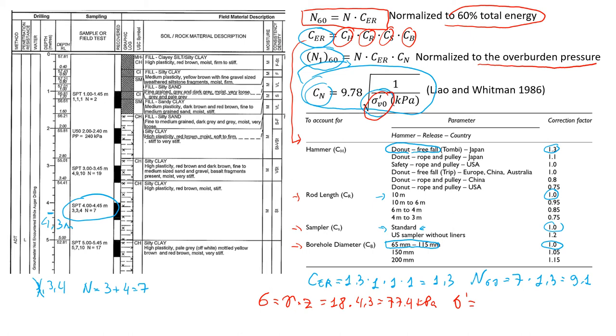So to find effective stress, we need to subtract the water pressure from total stress. We need to find if there is any groundwater level or not. When we examine the borehole log, you will see that groundwater not encountered. So we assume that there is no groundwater level here, so in this case, pore pressure will be zero. And the effective stress is going to be equal to the total stress, and it will be equal to 77.4 kPa.